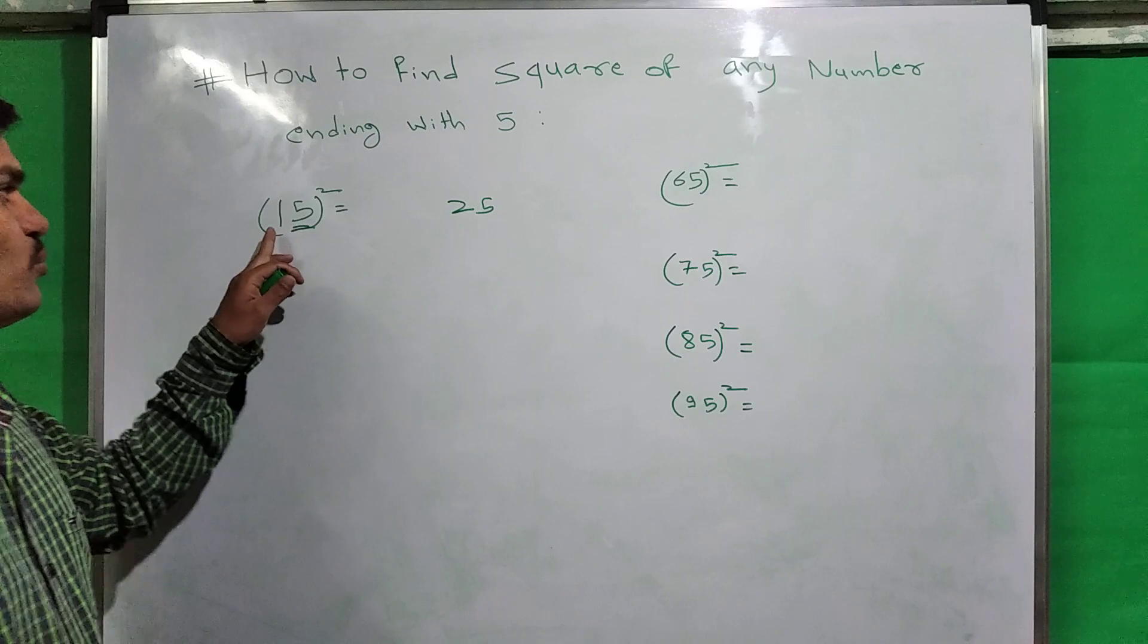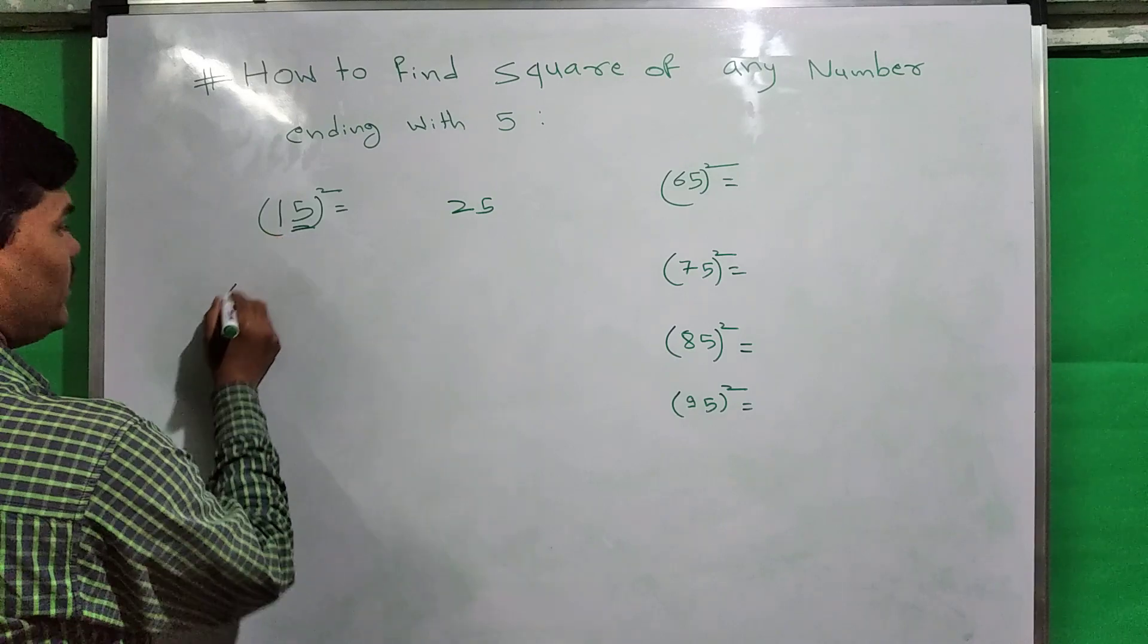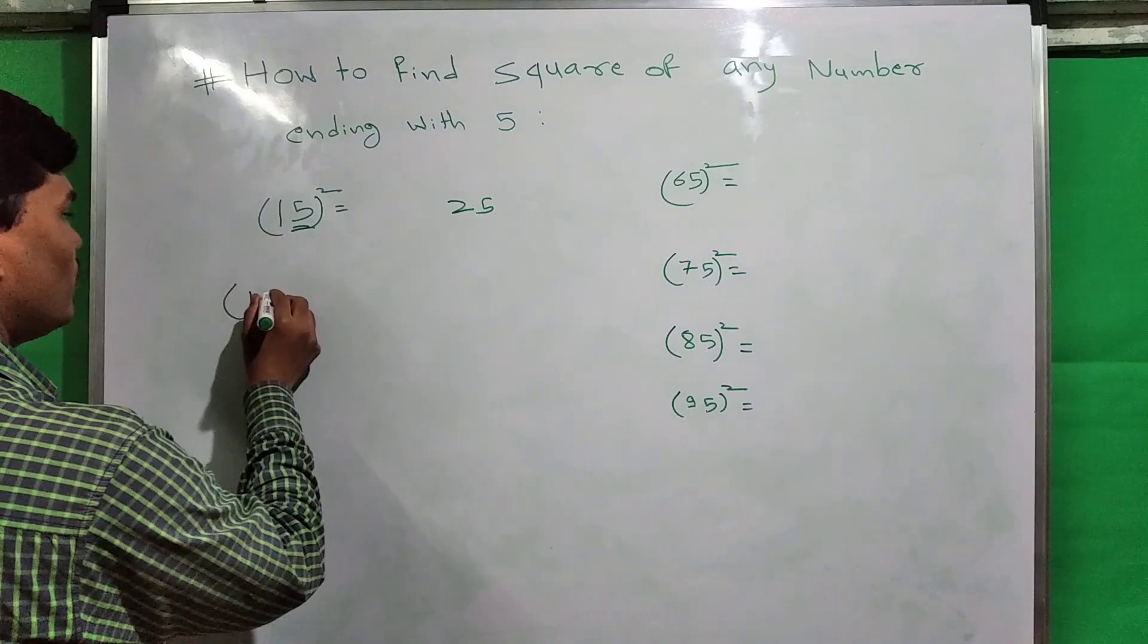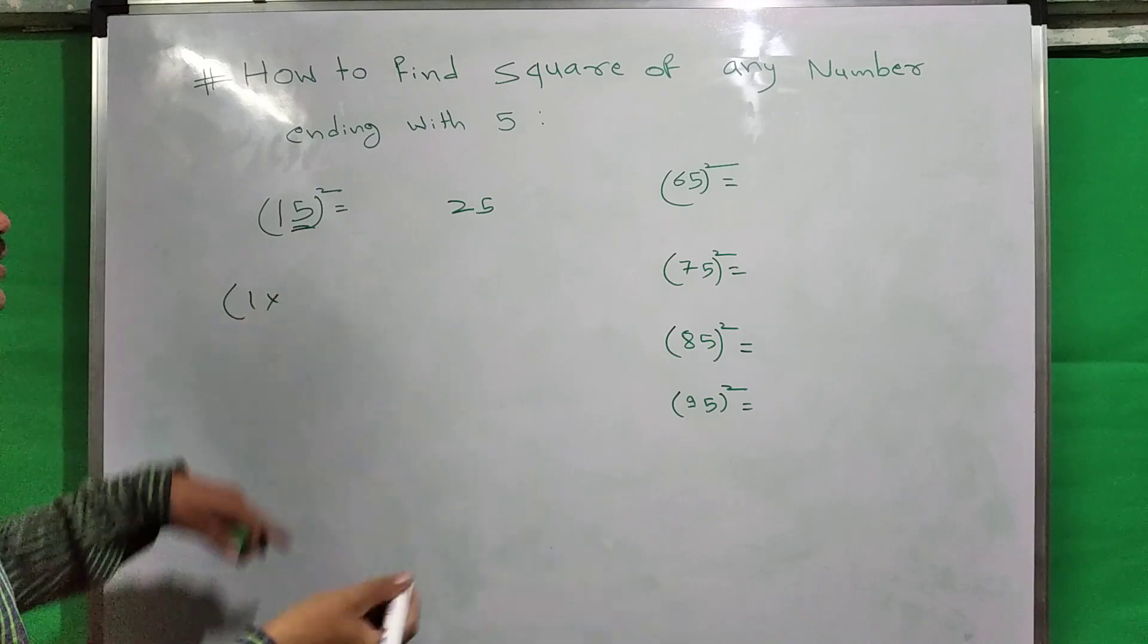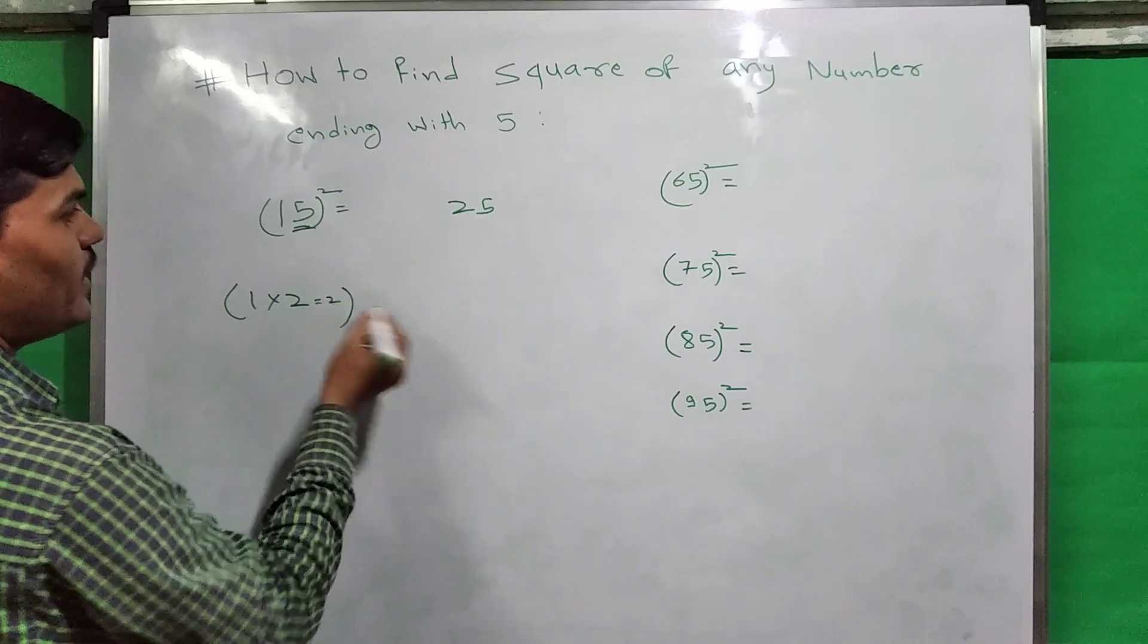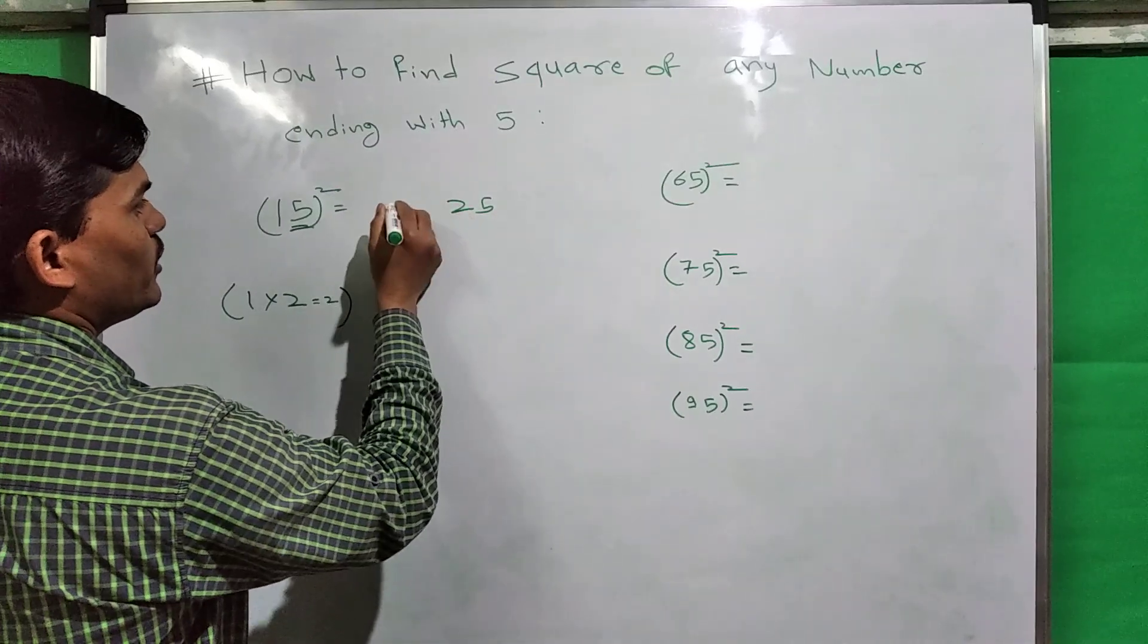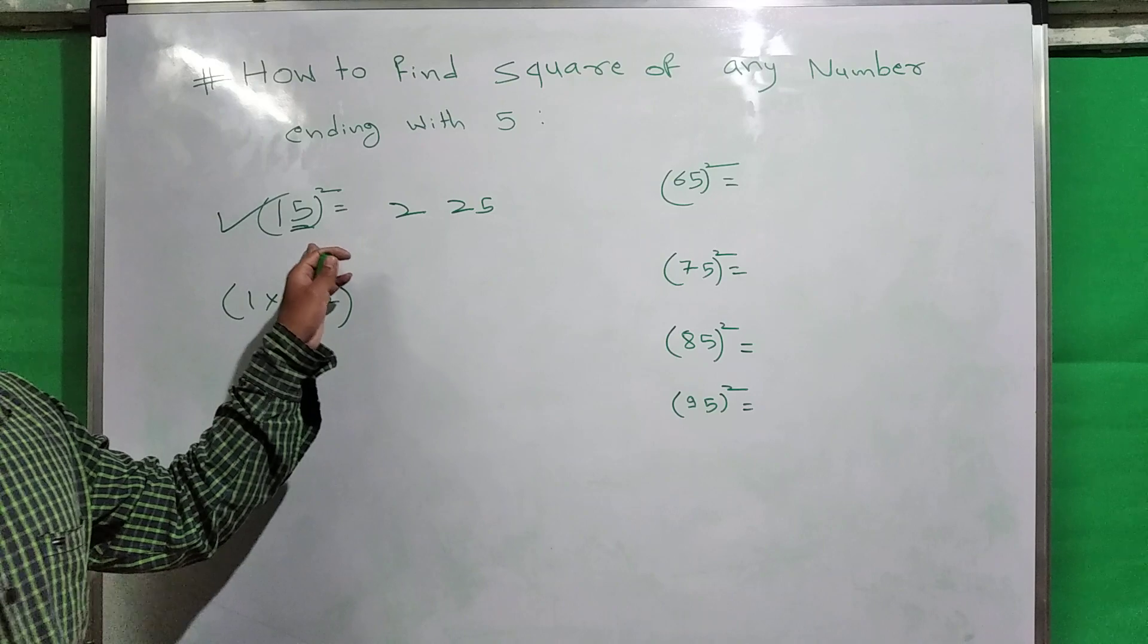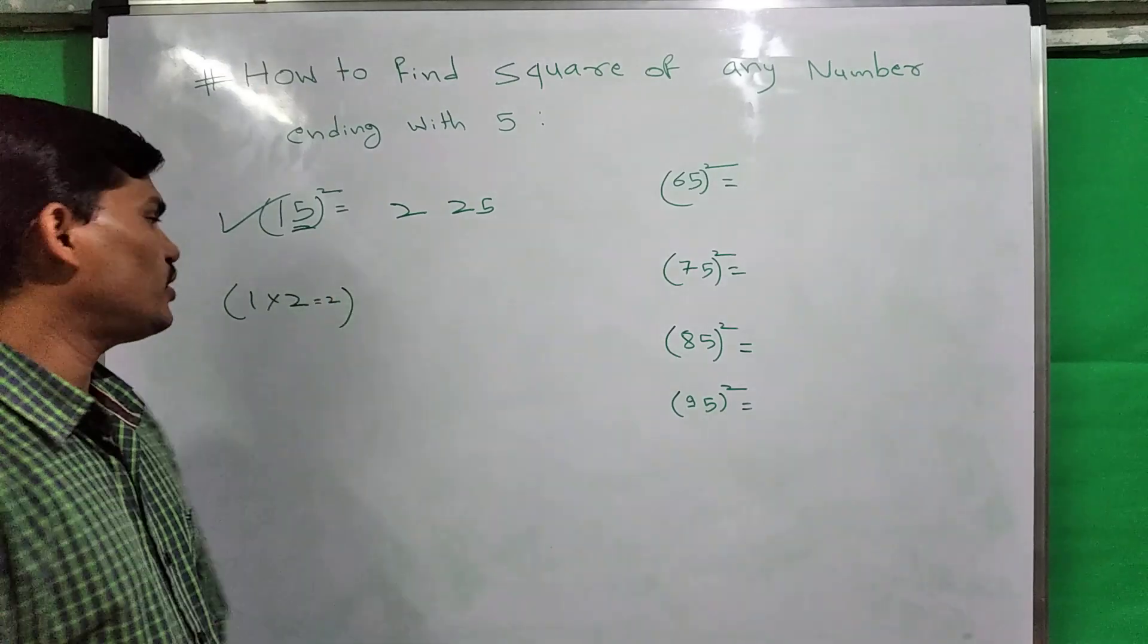Now this 1 is remaining. The next number of 1 is 2. Multiply it with 1. 1 times 2 equals 2. Write it down before this 25. This gives us the answer: 15 square is 225.